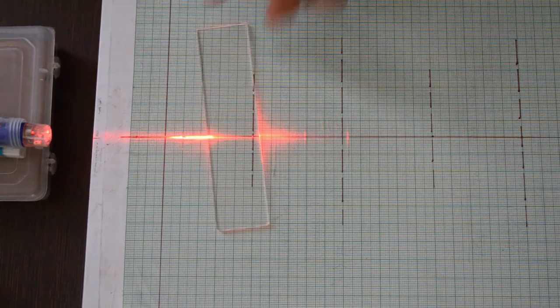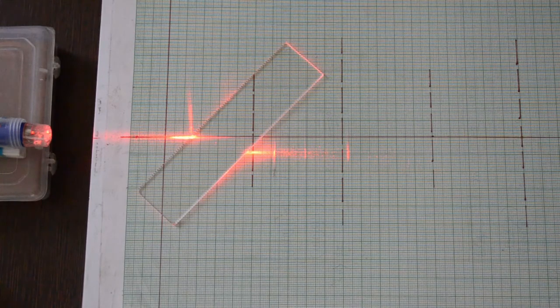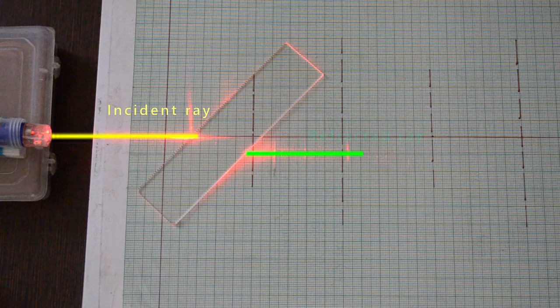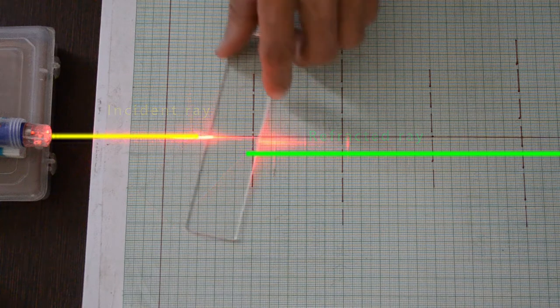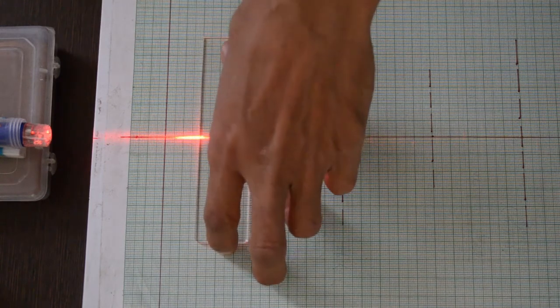Light doesn't always change path when refraction occurs. Light changes path only when both mediums have different refractive index and light ray encounters a medium change at an angle other than normal.